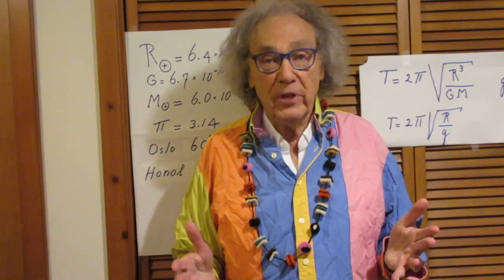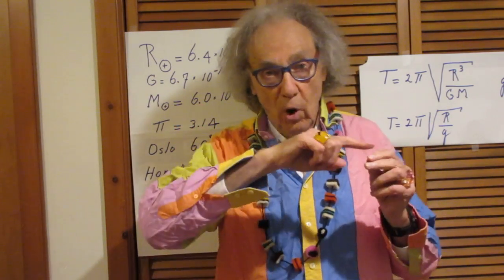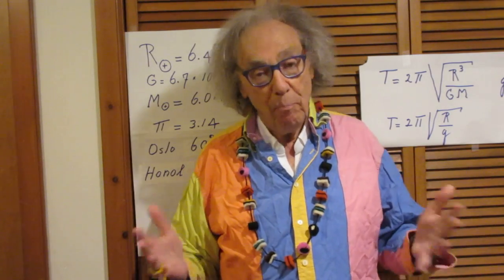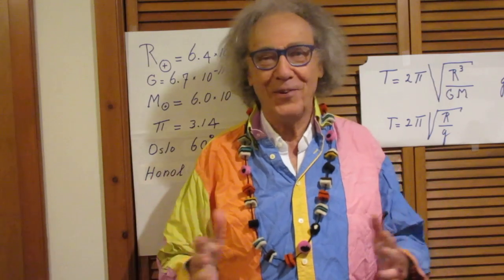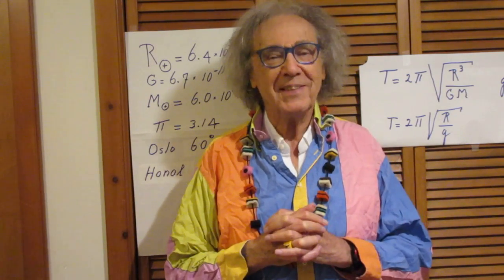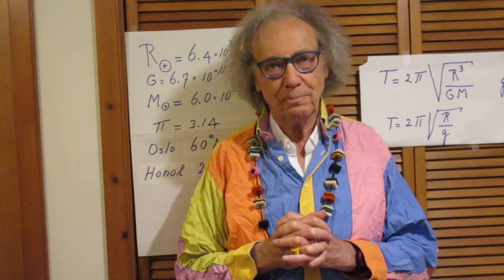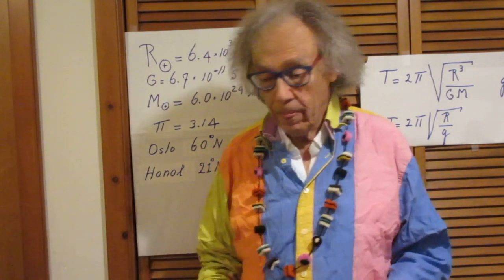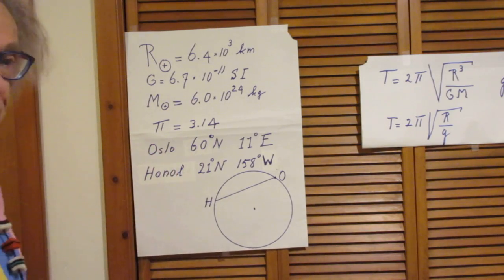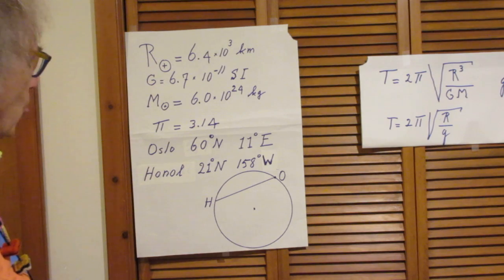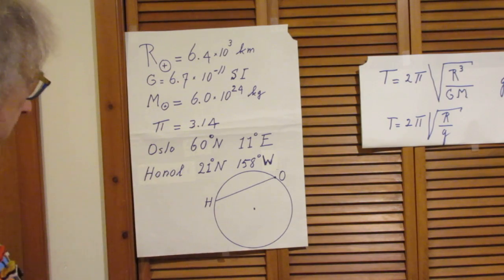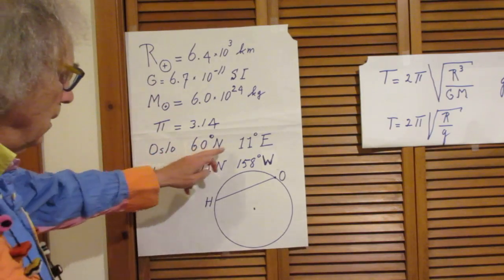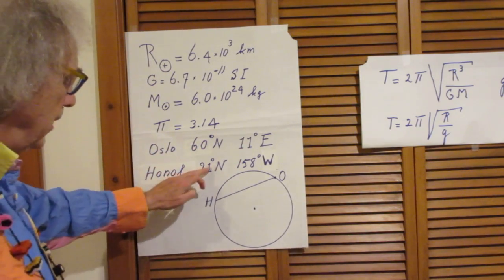I looked up on the web the distance between Oslo and Honolulu along the surface of the Earth. You may not need it, but I thought I'd give it to you. That distance is 10,920 kilometers. I'm not saying you should use it — if you want to, you can. If you look at the information I gave you before, you can find the position of Oslo in latitude and longitude, and Honolulu in latitude and longitude.